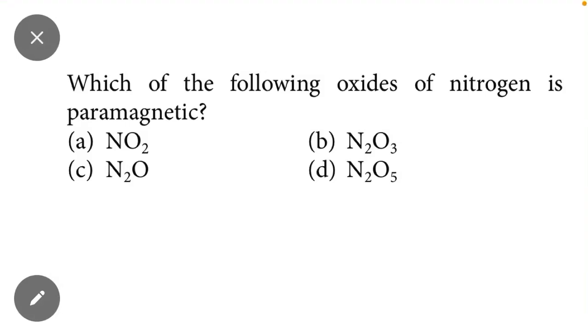Mr. Academy students, in this video we will study which oxide of nitrogen is paramagnetic. Here oxides of nitrogen are given: NO2, N2O3, N2O, and N2O5. We have to identify which oxide of nitrogen is paramagnetic.